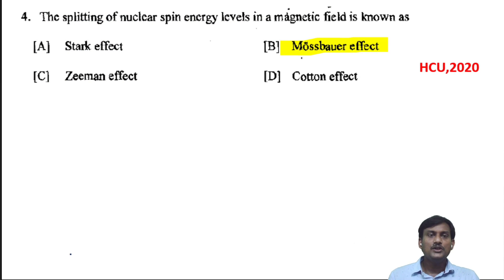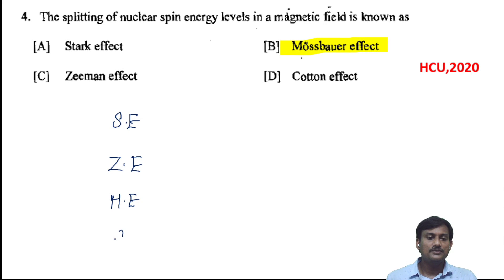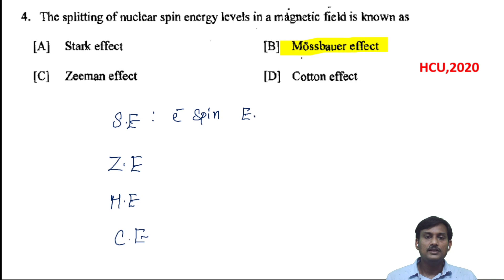The splitting of nuclear spin energy levels in a magnetic field is known as — here different effects are given: Stark effect, Zeeman effect, Mossbauer effect, and Cotton effect. The Stark effect is the splitting of electron spin in the presence of an electrical field.